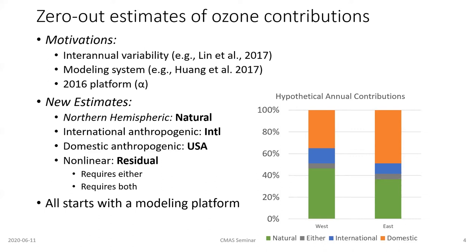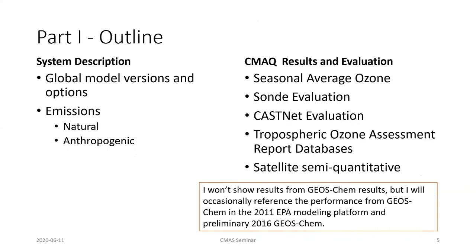Coming up with these estimates starts with a modeling platform. We create a modeling system to try to reproduce what's happening in the real world. Part one will focus on the modeling system: I'll describe the global to hemispheric models, the emissions both natural and anthropogenic, then how the model performed — looking at seasonal average ozone, sonde locations, CASNET sites representing less urban environments, the TOR database, and satellite records.